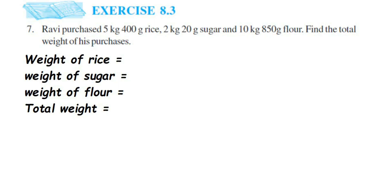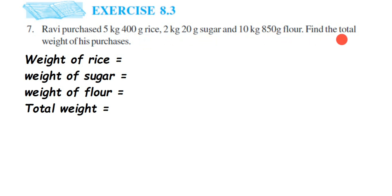Hey everyone, I'm doing exercise 8.37, chapter Jesima of Classics, based on the new syllabus. The question is: Ravi purchased 5 kg 400 gram rice, 2 kg 20 gram sugar, and 10 kg 850 gram flour. Find the total weight of his purchases. We have to find the total weight, which means we have to add all these values.